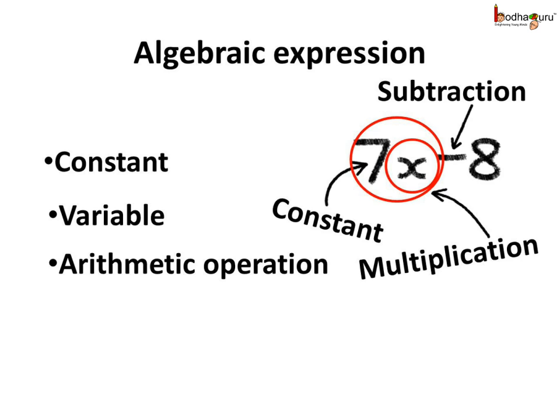Here, 7x minus 8 is an example of algebraic expression. Why? Because, in this case, 7 and 8 are the constants and their values are fixed. x is a variable and there are two operations. These are multiplication between 7 and x and the subtraction operation. So, this was an algebraic expression, 7x minus 8.